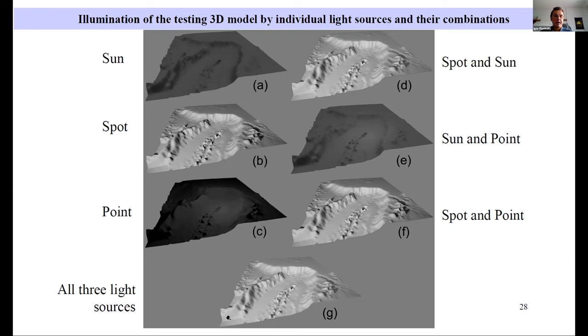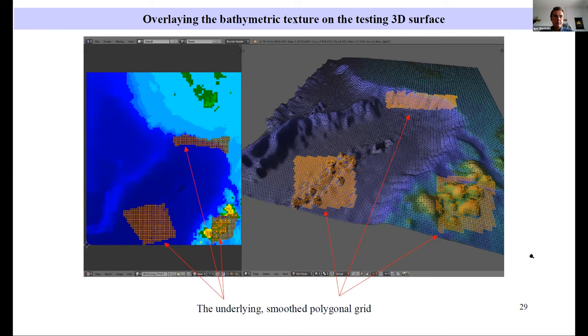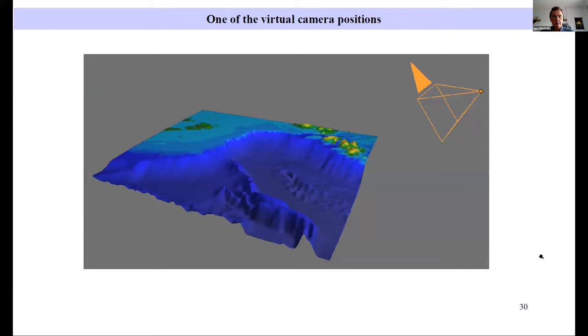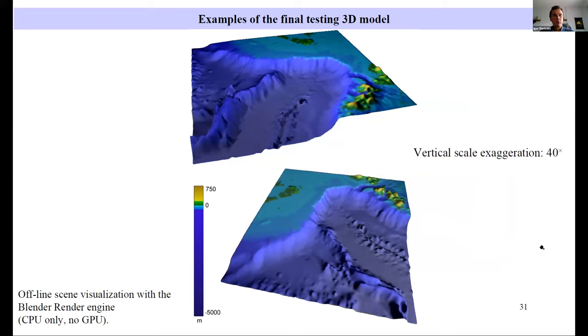Here you can see overlaying of the bathymetric layer over 3D model. Here you can see one of the possible positions of virtual camera. And this is final results.